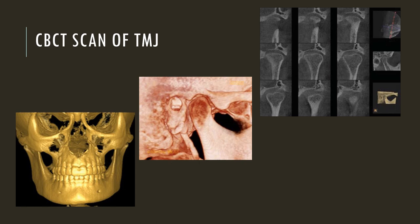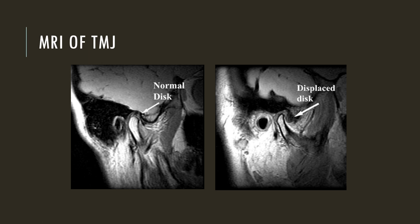On the other hand, MRI of the TMJ is specifically reserved to view the disc. This is a comparison of a normal disc on MRI and a displaced disc. You can see the soft tissue component displaced anterior to the condyle, and this is the MRI view of a TM joint.